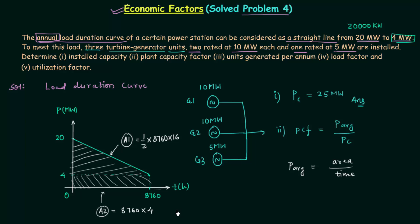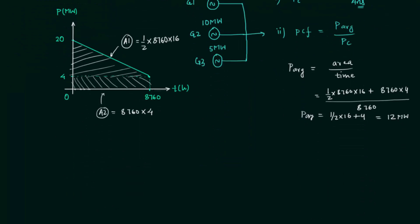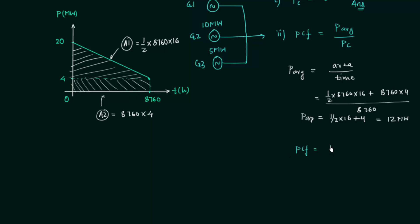Adding A1 and A2 gives the total area. Dividing by total time 8760, the 8760 cancels out, giving P_average = ½ × 16 + 4 = 8 + 4 = 12MW. So the average power is 12MW. The plant capacity factor PCF = 12MW / 25MW = 0.48, or 48%. This is the answer to the second part.